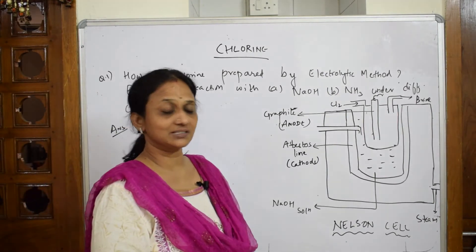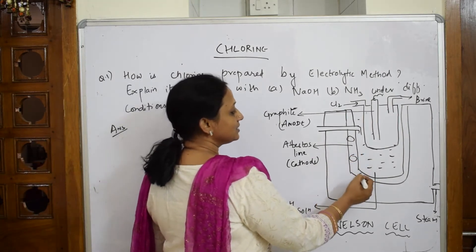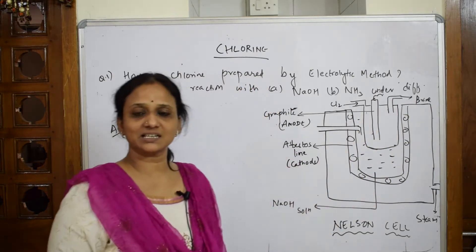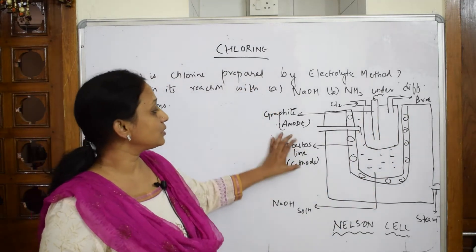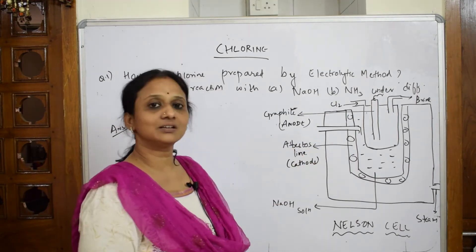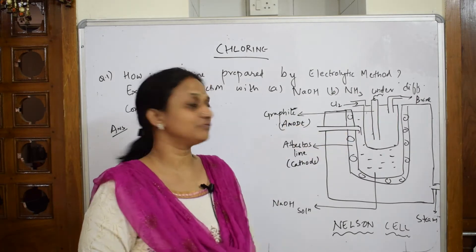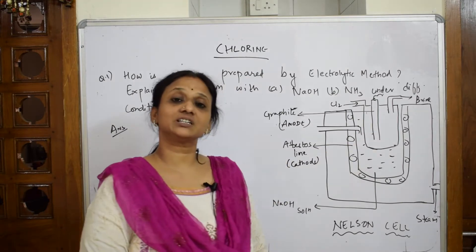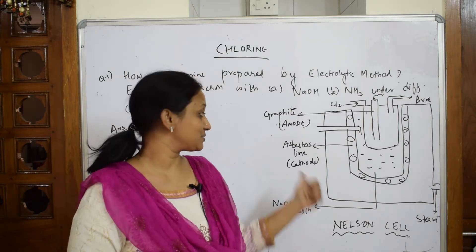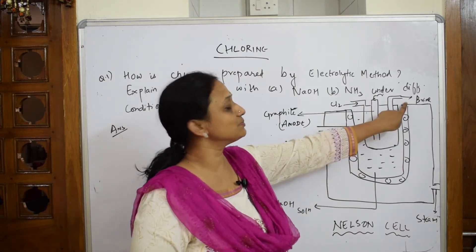In the Nelson cell, the construction involves a U-shaped porous container. This porous container, as in any electrolytic cell, contains both the anode and cathode. The porous container is lined by asbestos, which acts as the cathode — that is where the reduction process happens. A graphite or carbon rod is dipped into the solution and acts as the anode. So: anode is a graphite rod, cathode is asbestos lining.